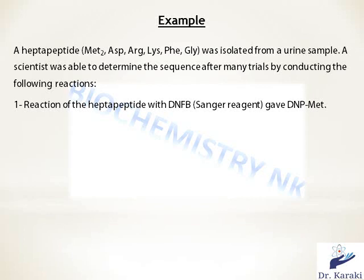Suppose you have a purified protein that consists of seven amino acids: two methionine, one aspartic acid, arginine, lysine, phenylalanine, and glycine. Your goal is to find the exact sequence of amino acids in that given protein by conducting the following reactions.